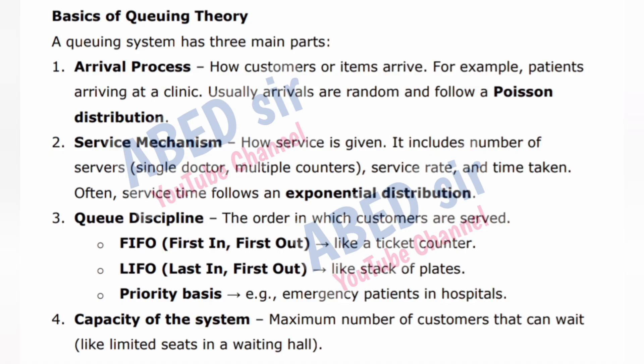3. Queue discipline — the order in which customers are served: FIFO (first in, first out) like a ticket counter; LIFO (last in, first out) like a stack of plates; priority basis, for example emergency patients in hospitals. 4. Capacity of the system — the maximum number of customers that can wait, like limited seats in a waiting hall.